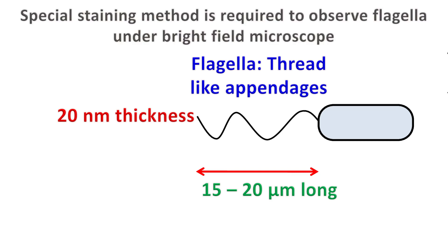Because they are so thin, they cannot be easily observed in a brightfield microscope. To observe them, a special type of staining is required in which they are made thick using chemicals and then observed under the microscope.